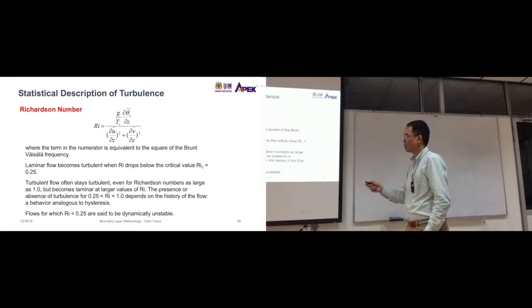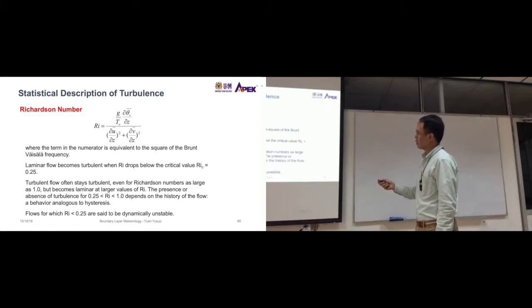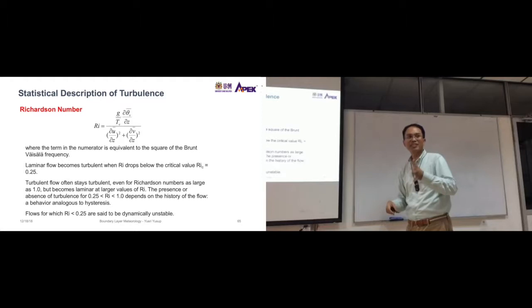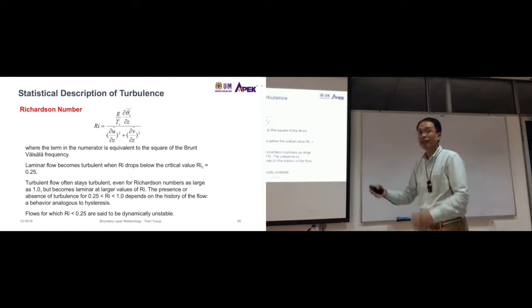Laminar flow becomes turbulent when ri drops below a critical value of ric, 0.25. That means large values of ri, more than 0.25, not very large, let's say 0.3, 0.4, 0.5, or even 1, means that it is laminar flow. Less than 0.25 is turbulent flow.